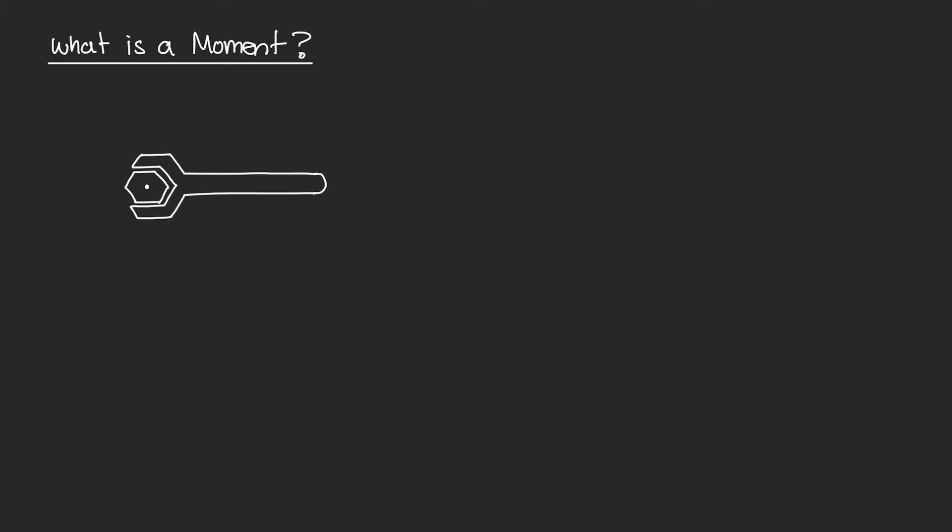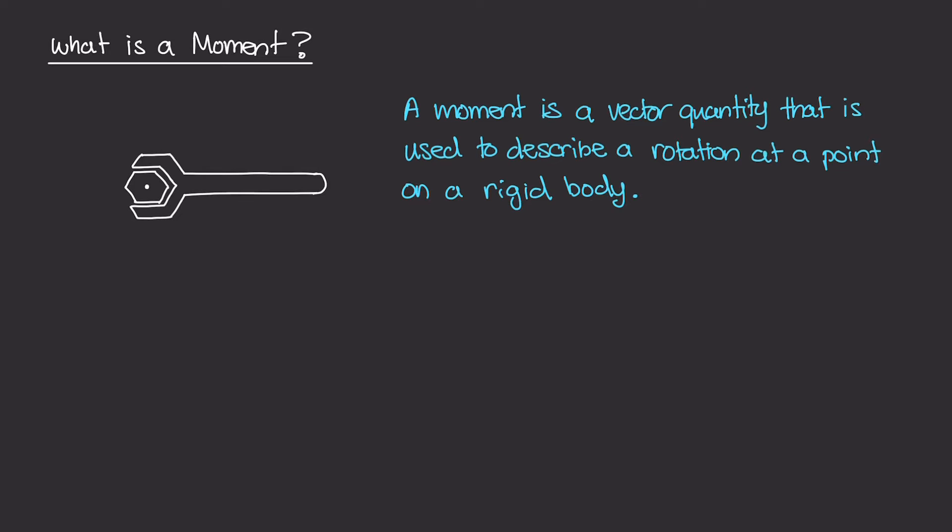More clearly or explicitly, the definition of a moment is that it's a vector quantity that is used to describe a rotation at a point on a rigid body. Our moment is a vector quantity, and that's really important because moments are not just numbers themselves, but they are indeed vectors. So they have a magnitude and a direction.